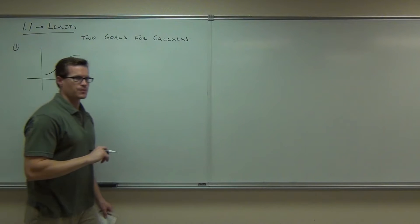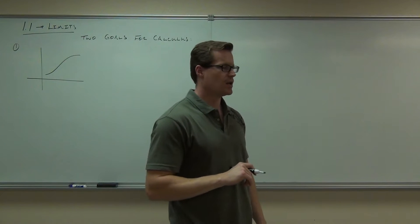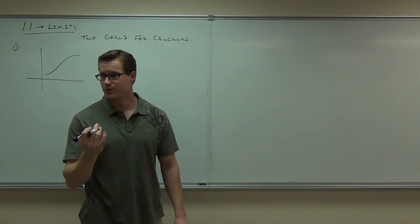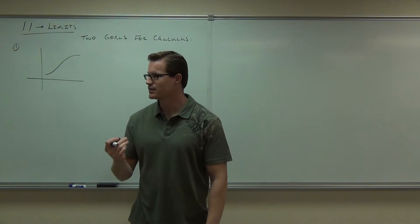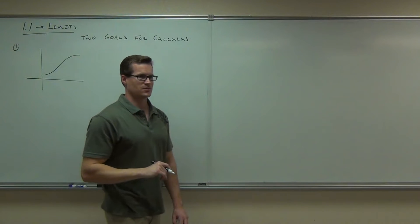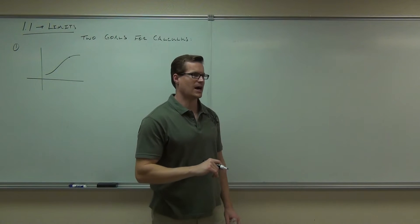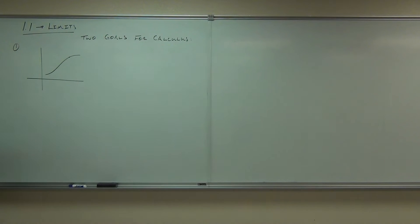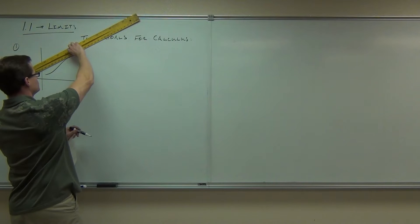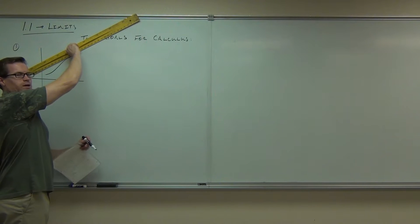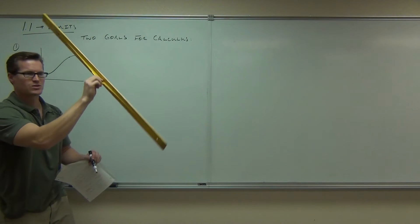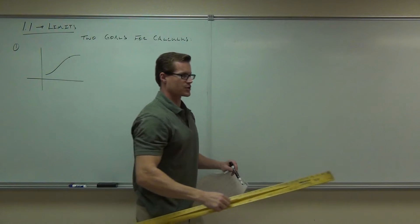Given any curve — not straight lines, straight lines are easy — but given a curve, I want to be able to find the slope of a curve at a point. Right now, we really have no idea how to do it. You can approximate it — slope is one half, maybe — but is that accurate? No idea. We can't just approximate slope. What we're going to do is find out a really good way, using calculus, to find the slope of a curve at a point.